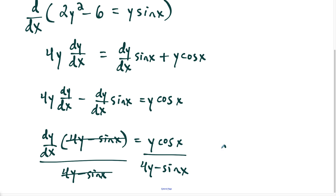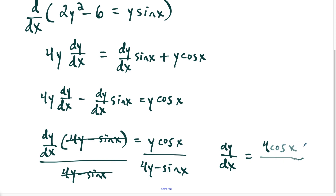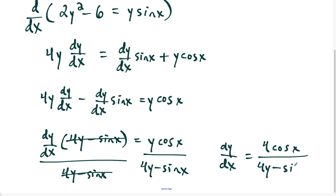Our final answer: dy/dx is equal to y cosine x over four y minus sine x.